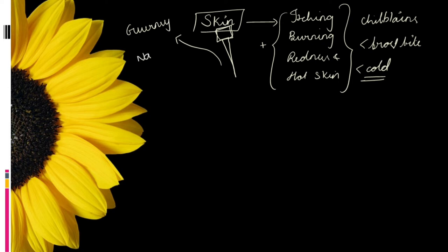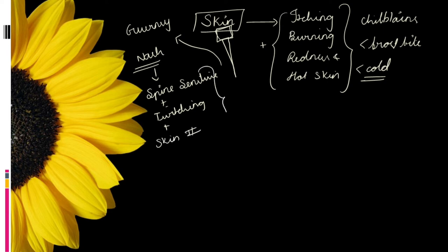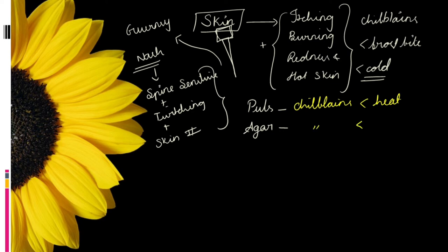Dr. Nash mentioned that if a patient presents with spine tenderness and sensitivity, along with twitching of muscles all over the body, and also shows these skin symptoms, we can directly prescribe Agaricus. Comparing with Pulsatilla: in Pulsatilla, chilblains are aggravated by heat — similar to Apis Mellifica — while in Agaricus, chilblains are aggravated by cold.